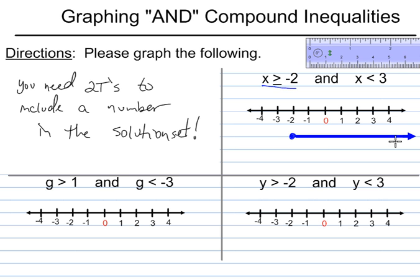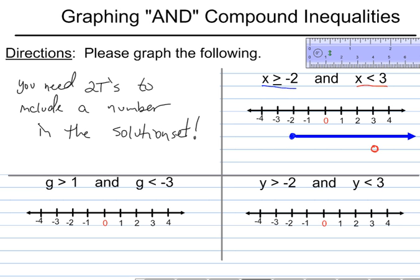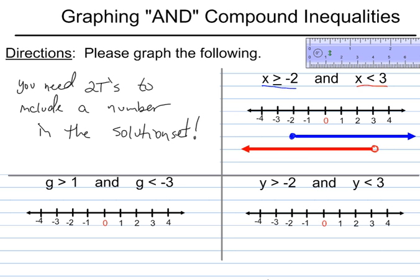The next one I'll do in red, also below the number line. It's going to be an open dot at 3, and for the numbers to be graphed that are less than 3, they're going to go to the left.